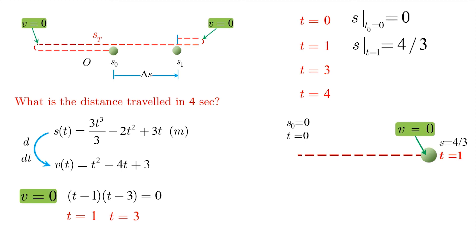At t equals three, you will find out that s of t becomes zero. This means that the particle moved back from its first turning point at t equals one to another turning point at t equals three.